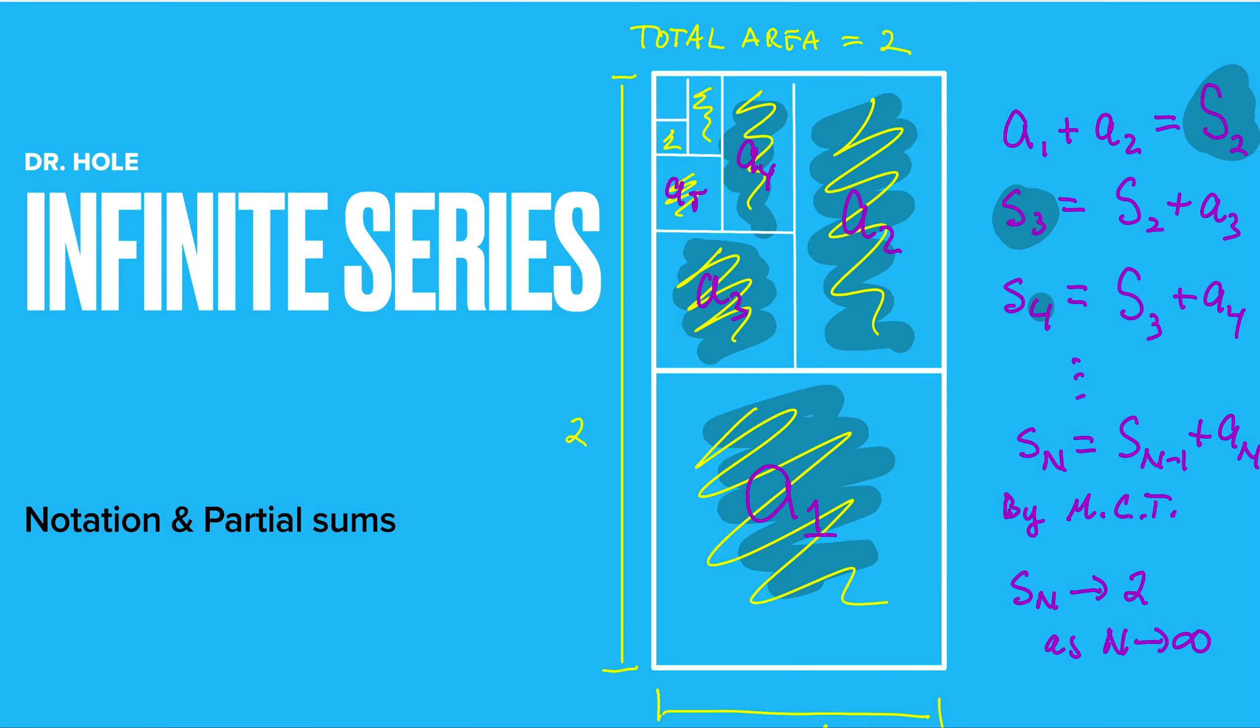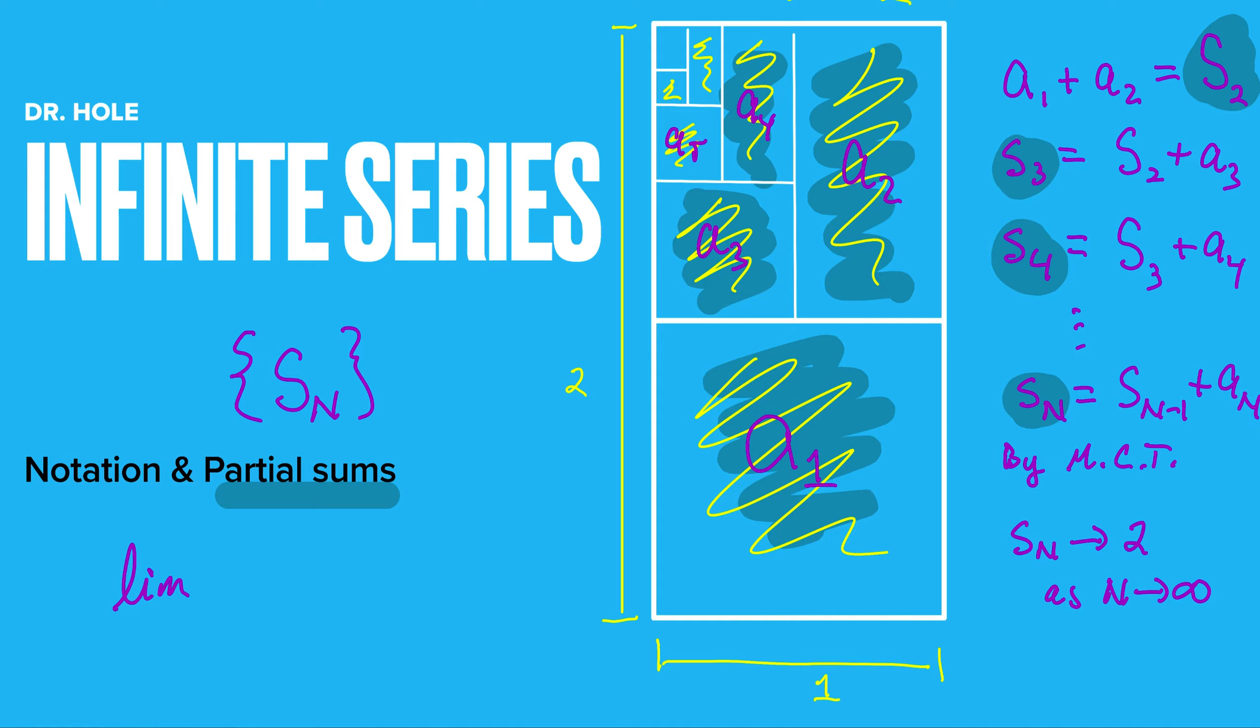What we have is that this sequence of capital S n's is a sequence of partial sums. So s sub n is a partial sum, and because we can always get the next partial sum, it's actually a sequence of partial sums. And what's happened here is that we've shown that the limit as capital N goes out to infinity of S n is equal to 2, and we can denote 2 as the sum of all of the shaded portions of the rectangle.